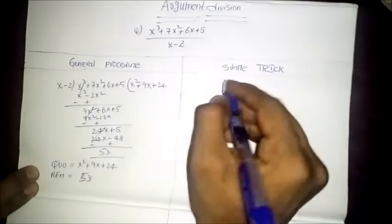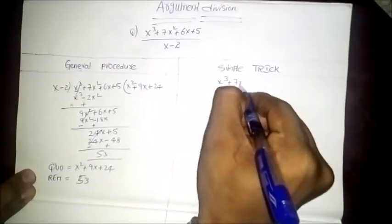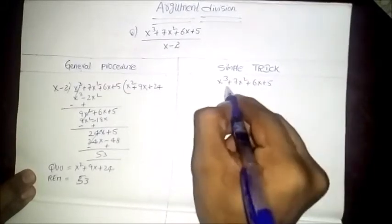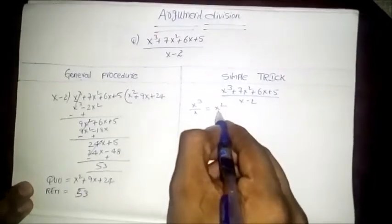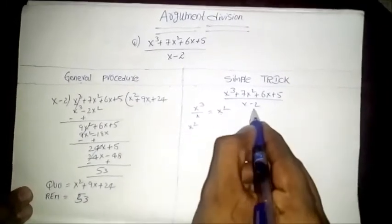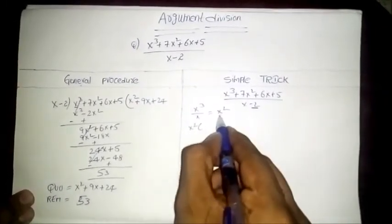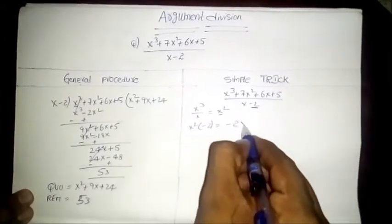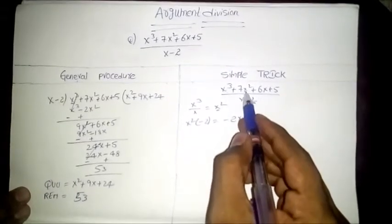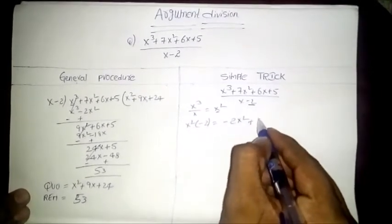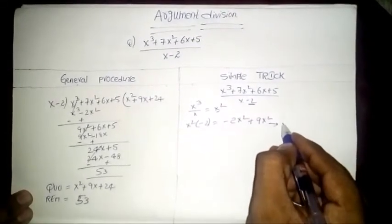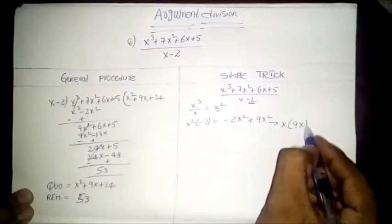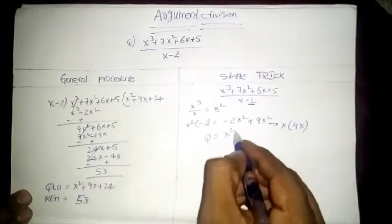But we have to solve this with a simple trick. First of all note the question. Here the highest degree x cubed is divided by x, we get x squared. The resultant x squared can be multiplied with minus 2, we get minus 2x squared, but whereas in the numerator we have 7x squared. That means we have to add 9x squared to get 7x squared, but this x squared is the multiplication of x into 9x. Hence q is equal to x squared plus 9x.